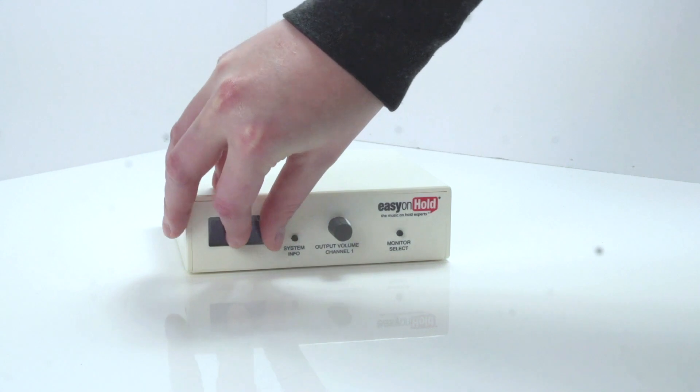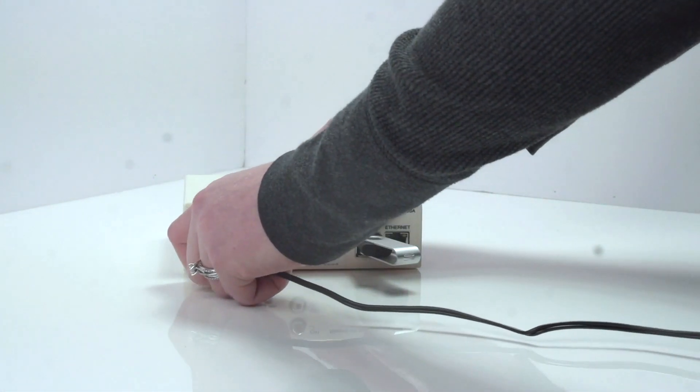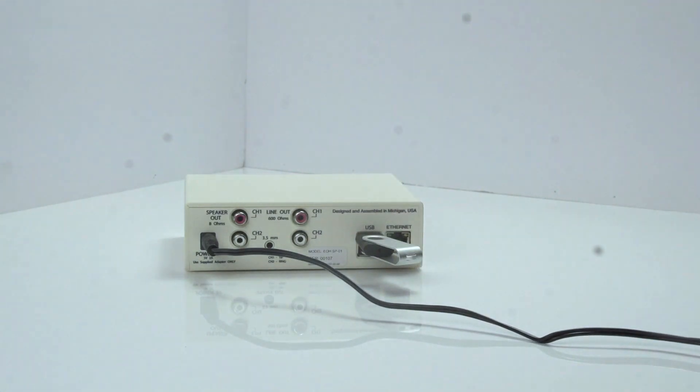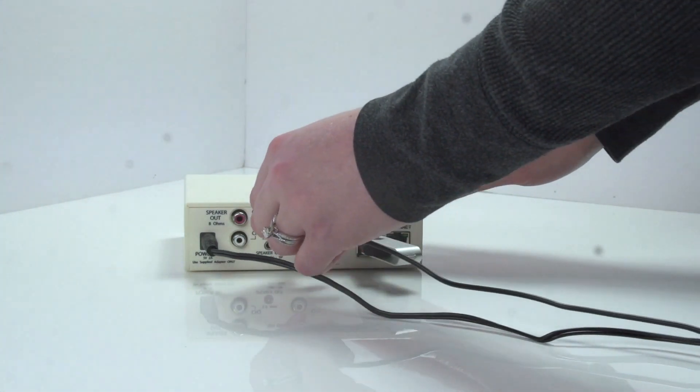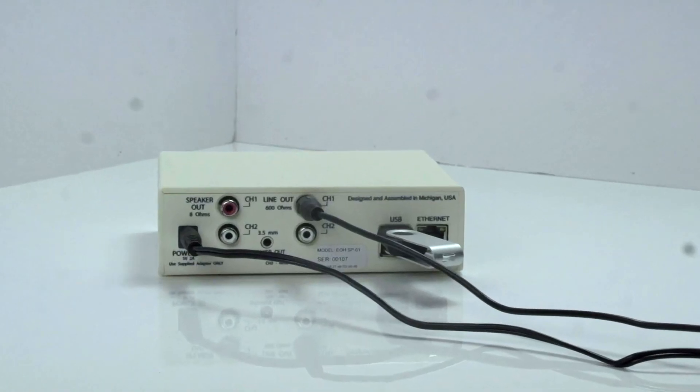Remove the protective film from the device screen and insert the USB drive. Then plug in the power cord. Then plug in the audio cable to the Channel 1, 600-ohm output.